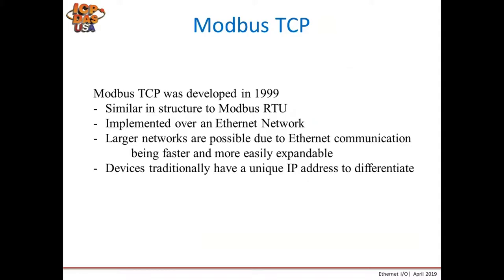Modbus TCP, however, was developed in 1999. It's similar in structure to Modbus RTU in that you can create similar commands and requests, but it is implemented over an Ethernet network, which makes it much more easily expandable, easier to build larger networks, and much faster than serial communication. Devices traditionally have a unique IP address to differentiate them, as opposed to a unique Modbus ID which limits devices to 255.